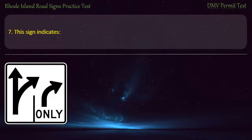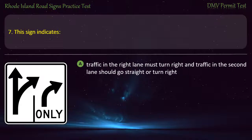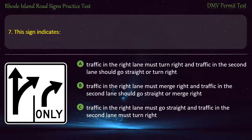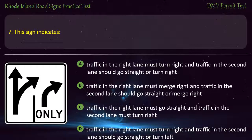Question 7. This sign indicates: traffic in the right lane must turn right and traffic in the second lane should go straight or turn right; traffic in the right lane must merge right and traffic in the second lane should go straight or merge right; traffic in the right lane and traffic in the second lane should go straight or turn left. Answer.